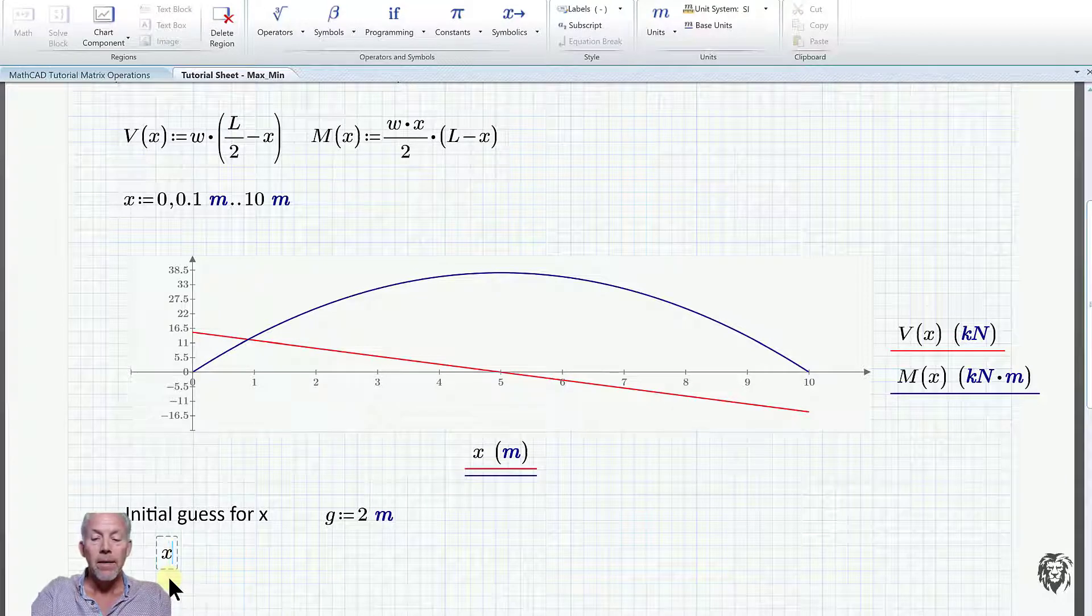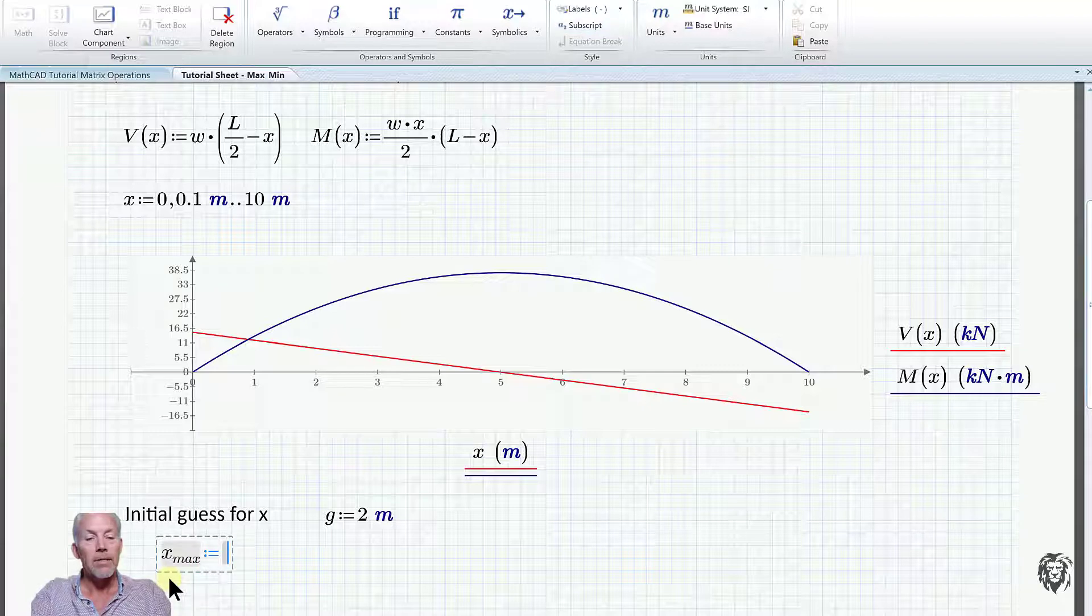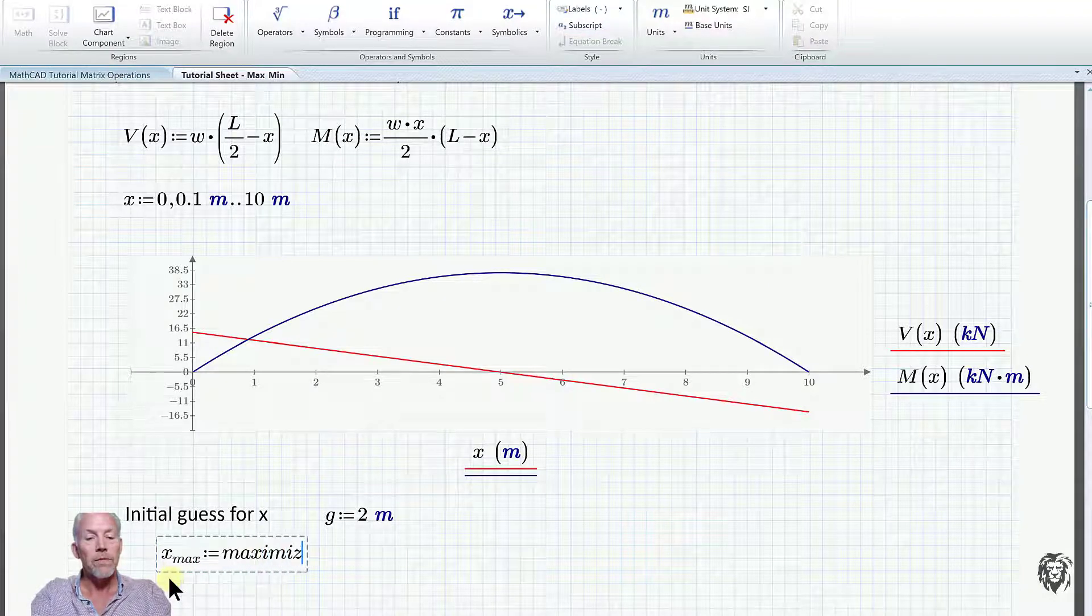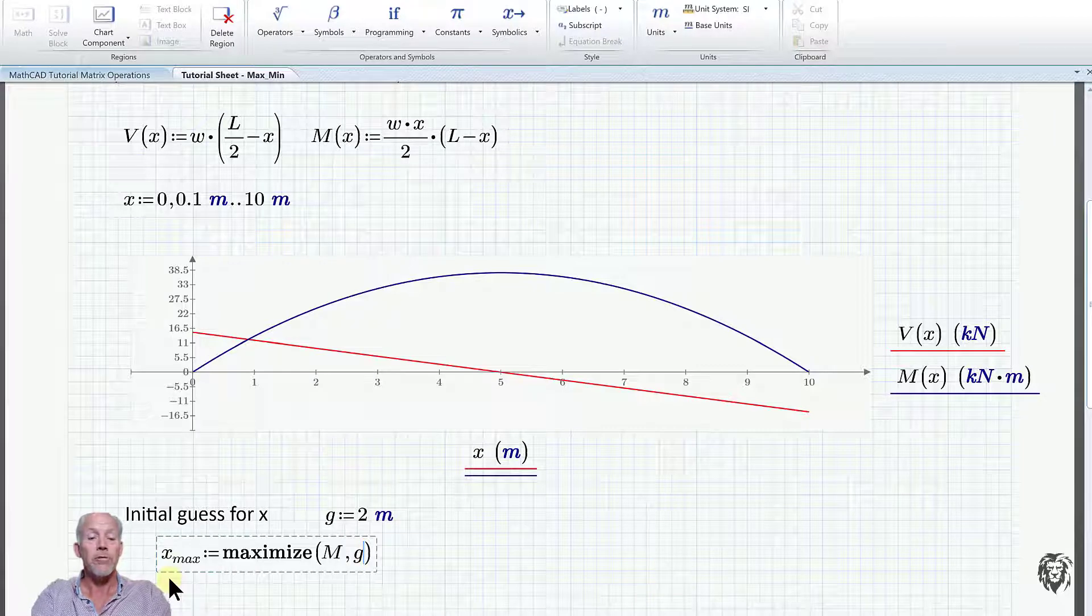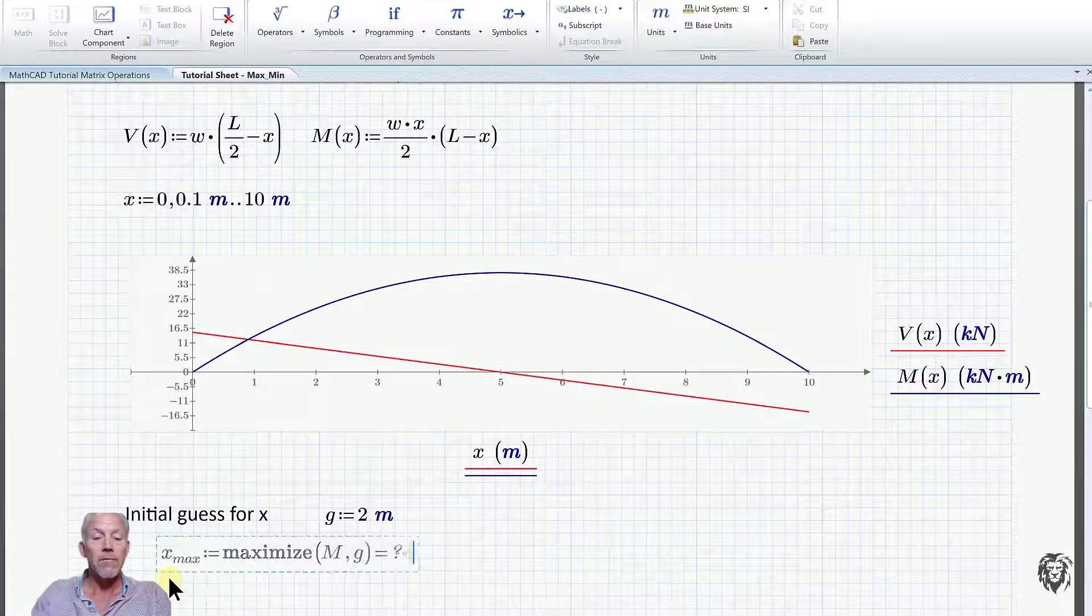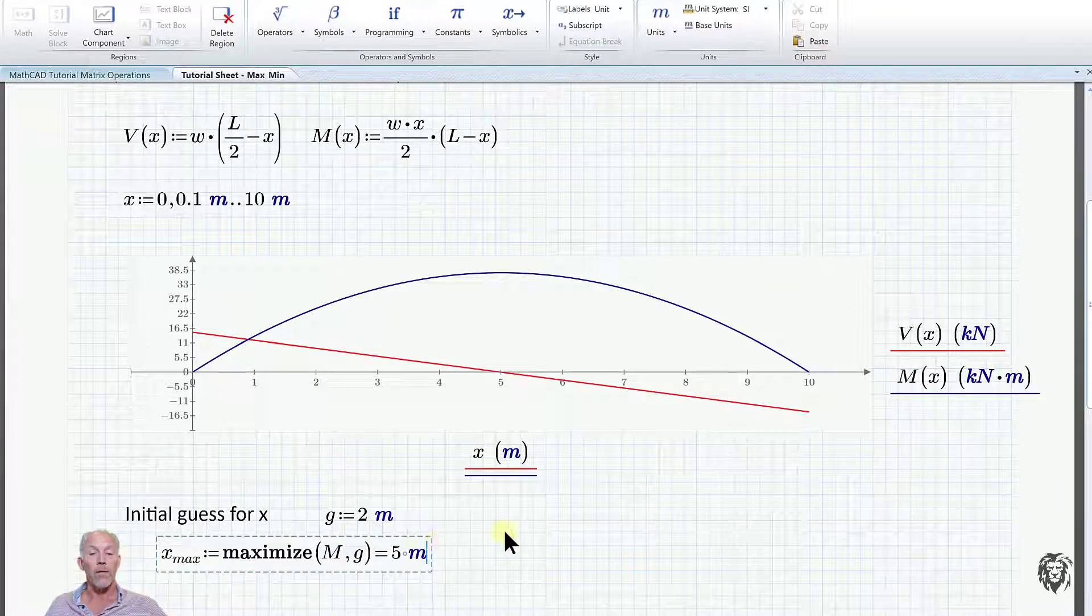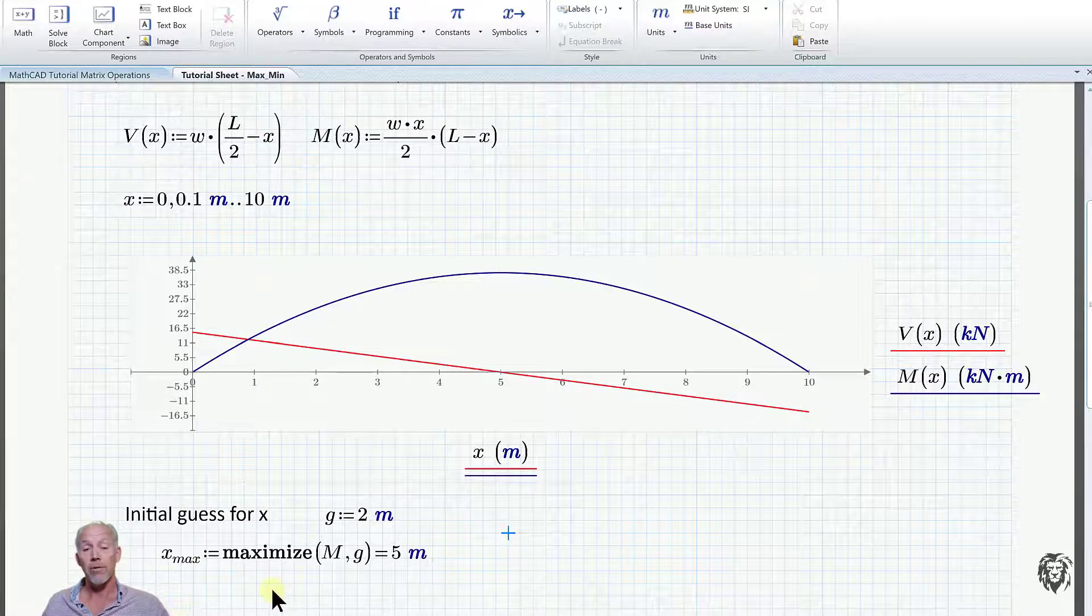X max equals, and to do this, I'm going to use the maximize function. It needs two parameters. The first one is the maximum of the moment, and it is going to use the guess that we did to get its value. And then I'm going to hit equal sign. And lo and behold, it's able to iterate around and find out that the maximum point occurs at five meters or L over two.